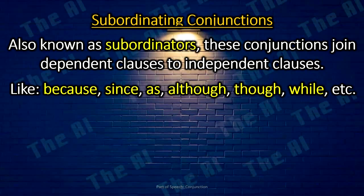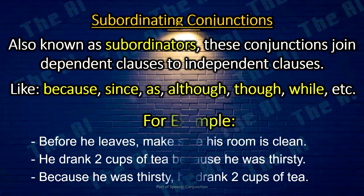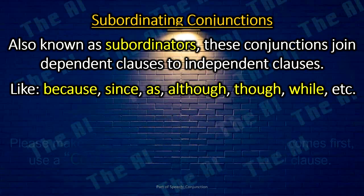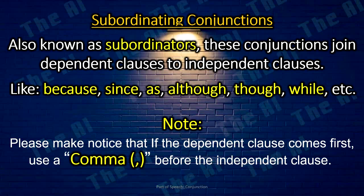Subordinating conjunctions, also known as subordinators, join dependent clauses to independent clauses, like because, since, although, as, while, though, whereas, etc. For example: Before he leaves, make sure his room is clean. He drank two cups of tea because he was thirsty. Because he was thirsty, he drank two cups of tea. Please note that if the dependent clause comes first, use a comma before the independent clause.